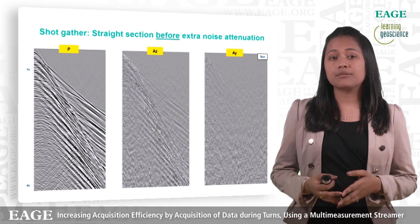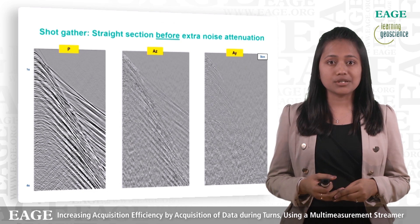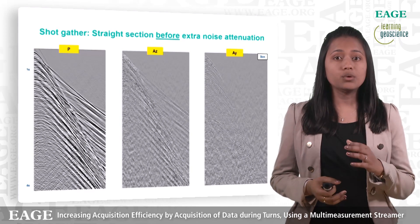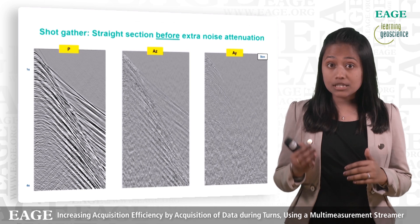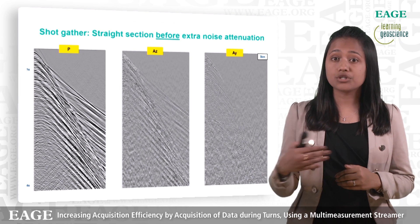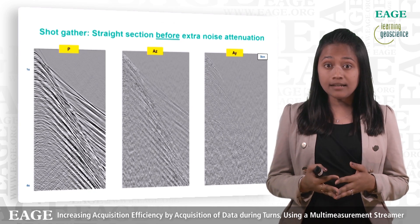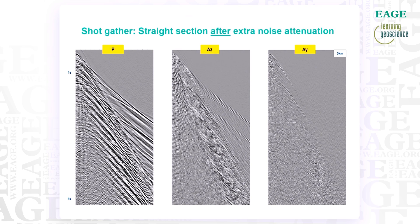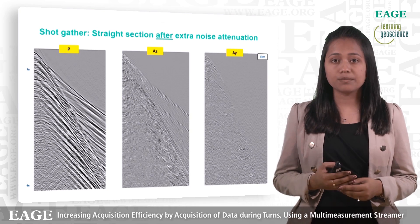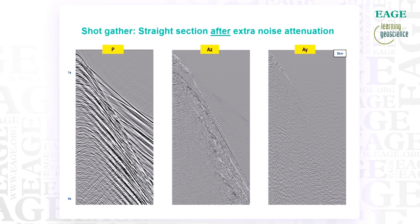Looking back to the details of analysis and processing, these plots represent the data after acquisition data conditioning. The left plot is the hydrophone data. The middle represents the vertical accelerometer data, which represents any energy that is going down and reflected back. The right plot is the cross-line accelerometer data, which represents any energy moving across the spread. The hydrophone data is very clean and the accelerometers exhibit the typical noise levels that we expect from this early stage of processing.